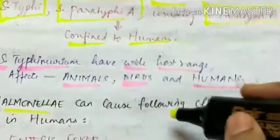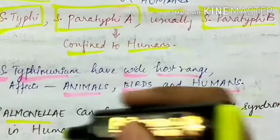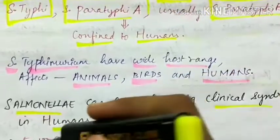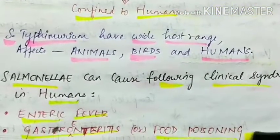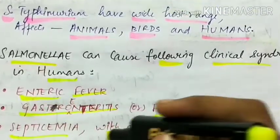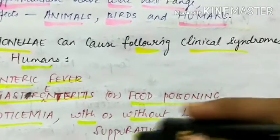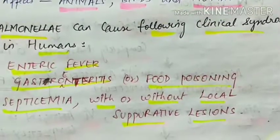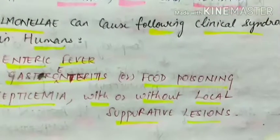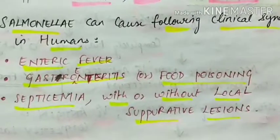Salmonella can cause the following clinical syndromes in humans: they include enteric fever, gastroenteritis or food poisoning, and septicemia with or without local suppurative lesions. We'll see about all these in detail in our next part of video. Thank you.